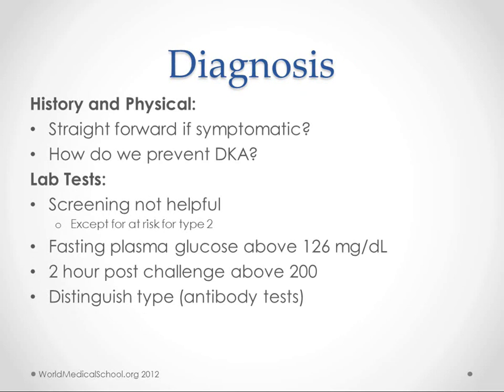For diagnosis, we use history and physical to determine whether to test for diabetes. If they have any of the symptoms in the office, we get a blood sugar test, and it's usually pretty straightforward. The reason I've got a question mark here is that if it's so straightforward, why do we still get kids presenting with ketoacidosis? It goes back to the fact that we don't get problems until the pancreas just can't produce enough insulin because it's down to 10 or 20% capacity — there's a threshold where it's just not enough. We don't have many good ideas about how to catch these kids before they go into ketoacidosis.